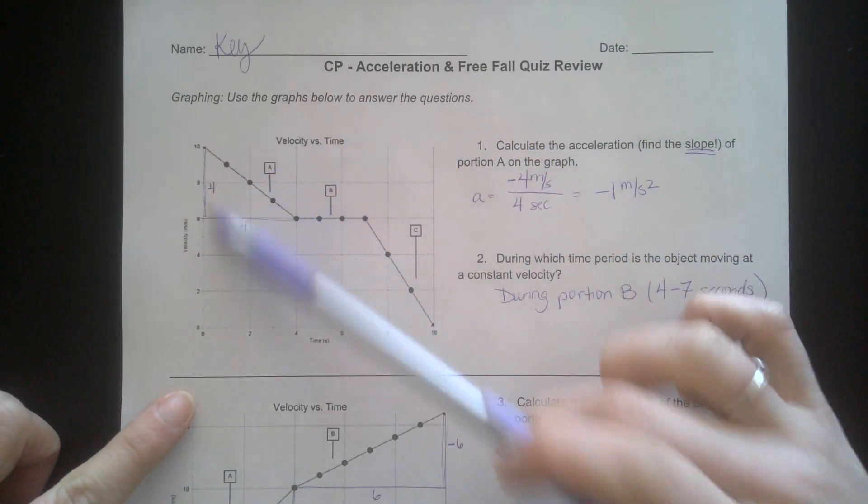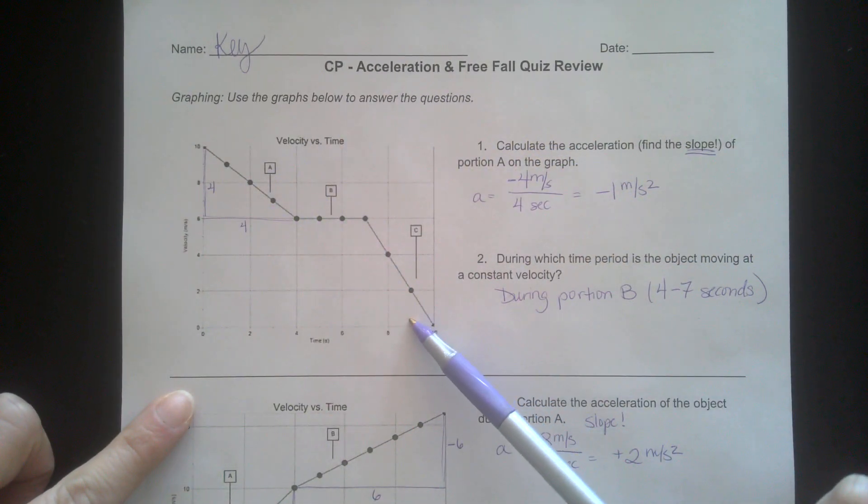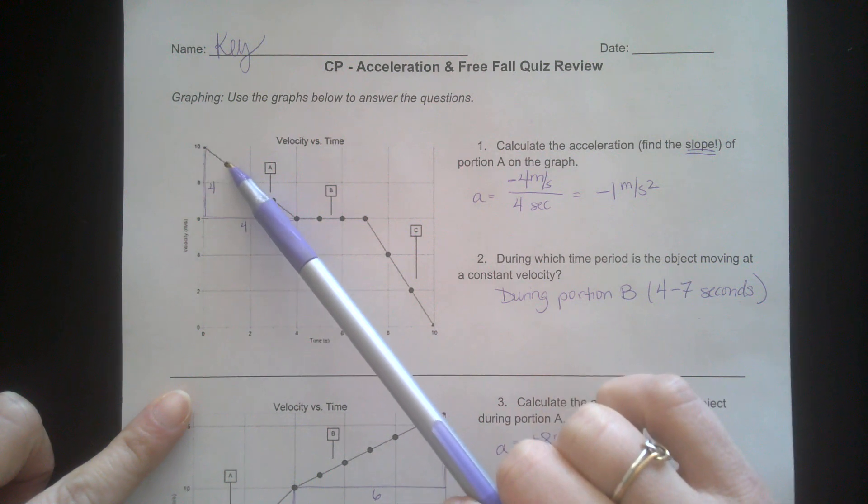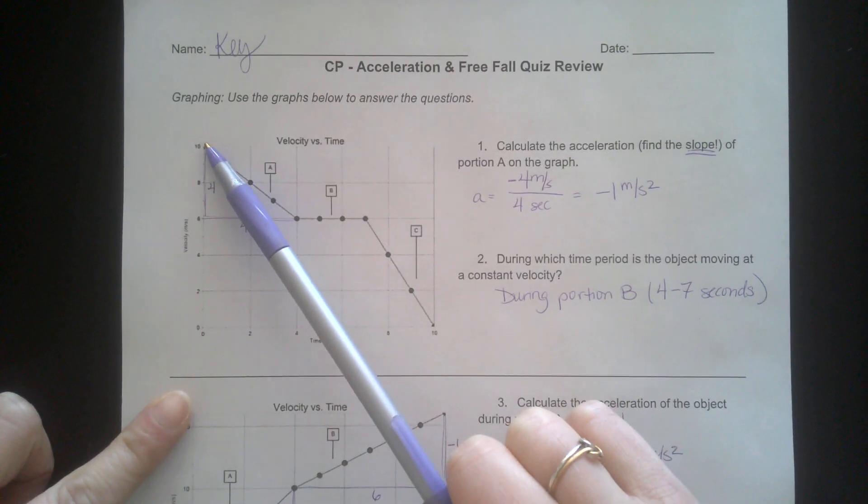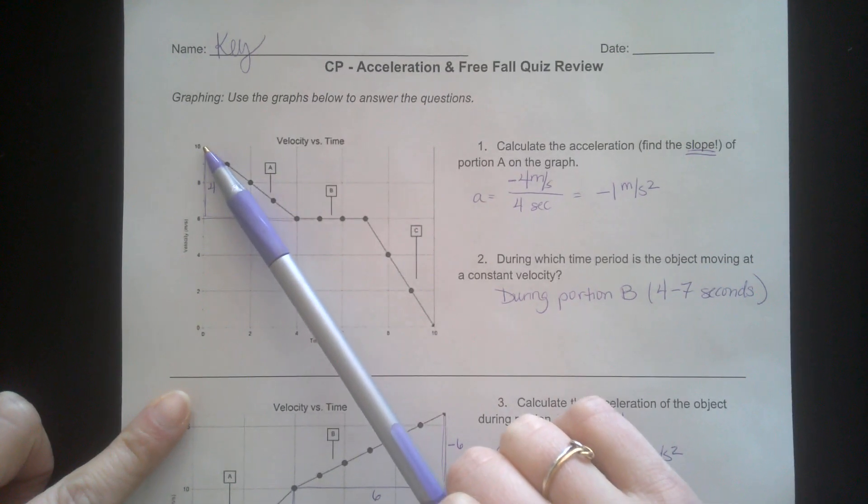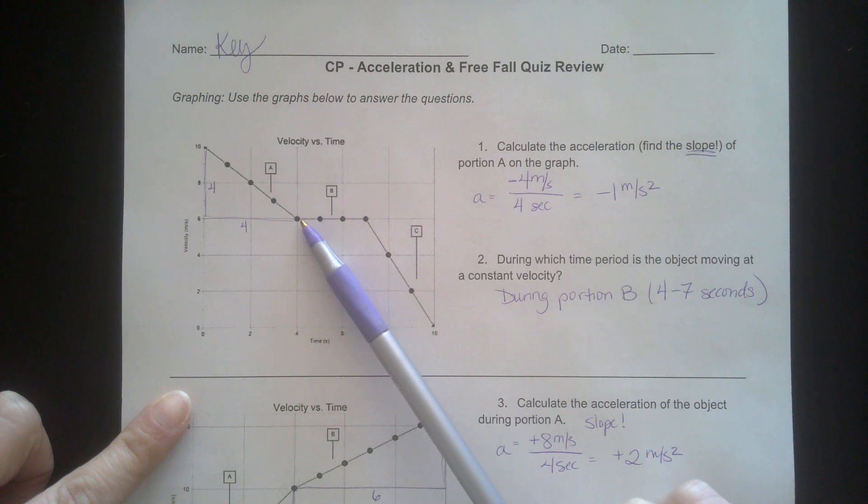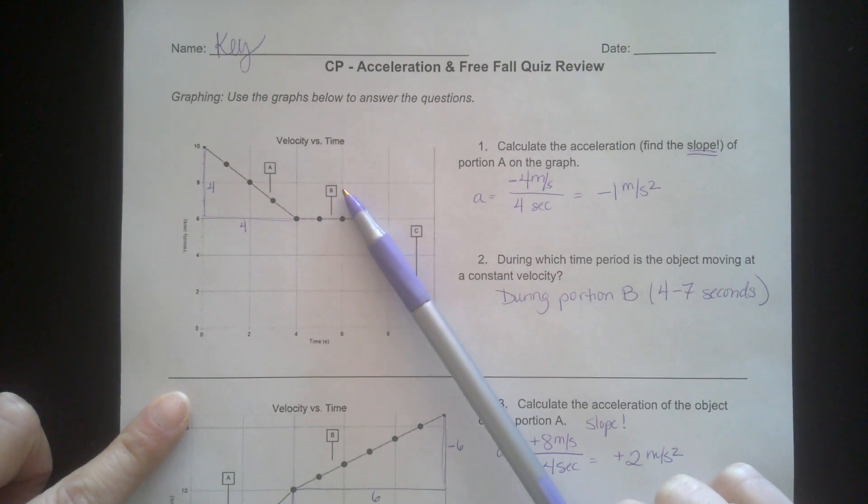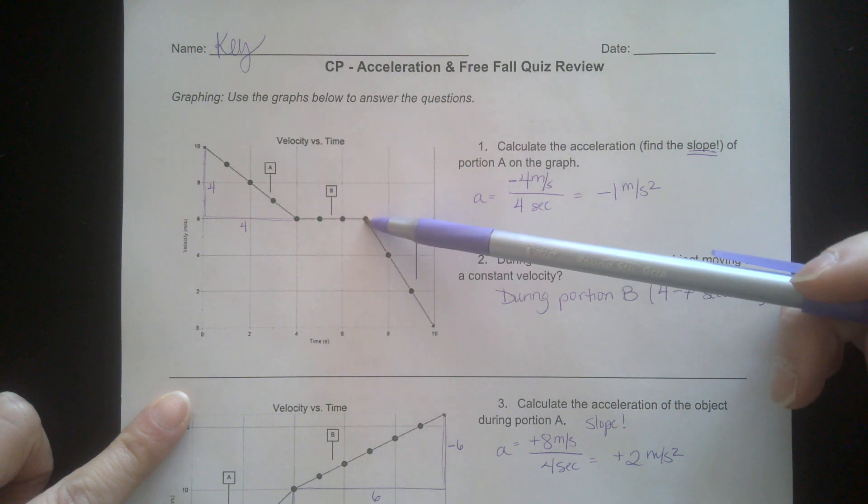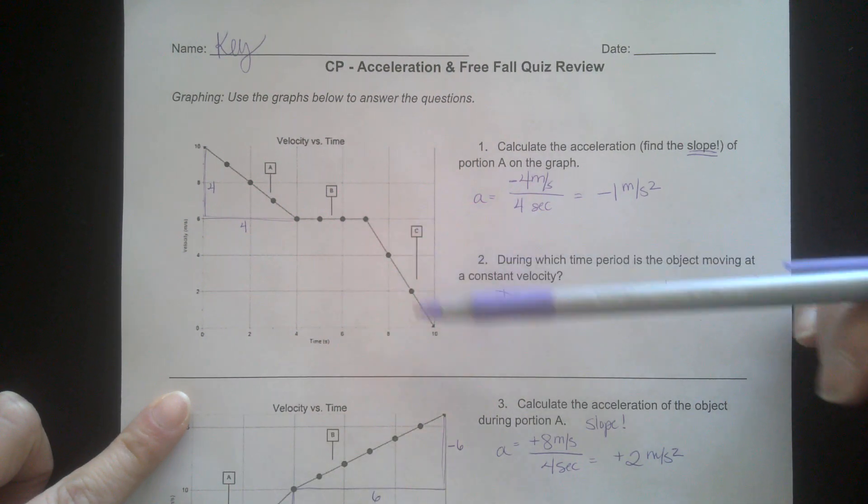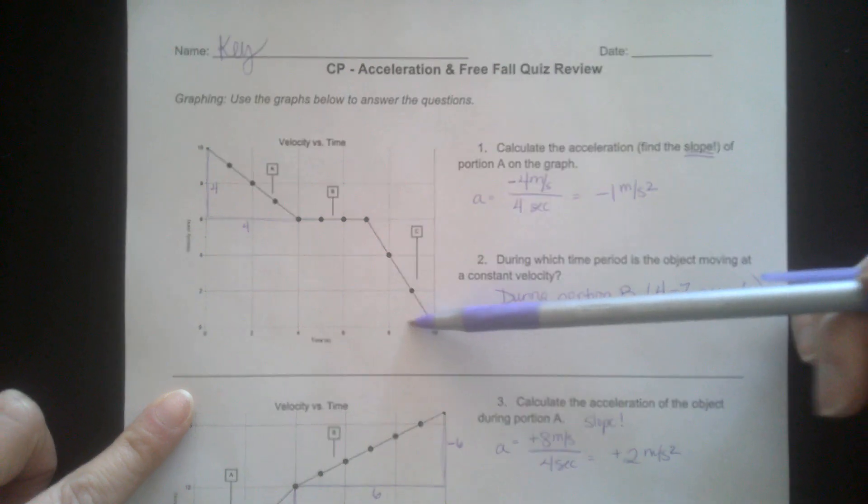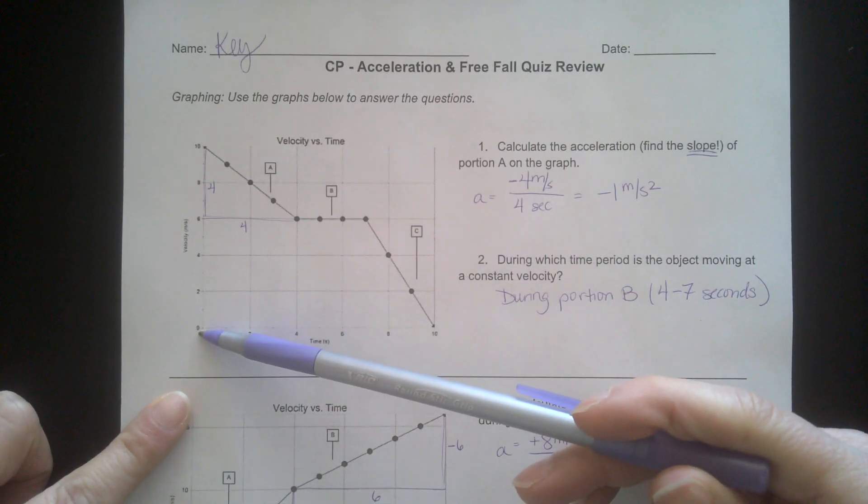You have a velocity versus time graph first. This shows you the velocity of an object over 10 seconds. The velocity decreases, so whatever object this is slows down during portion A, then moves with a constant velocity during portion B, and then slows down at an even faster rate during portion C. At 10 seconds, the object is stopped with a velocity of zero.